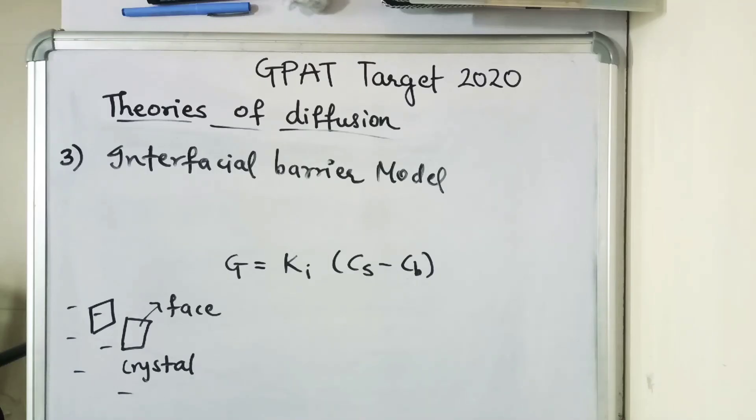Lastly, third is interfacial barrier model, also known as double barrier or limited solvation theory. The diffusion layer model and the Danckwerdt's model were based on two assumptions: first is the rate-determining step, and second is the solid-solution equilibrium. According to the interfacial barrier model, an intermediate concentration exists at the interface as a result of solvation mechanism and is the function of solubility rather than diffusion.